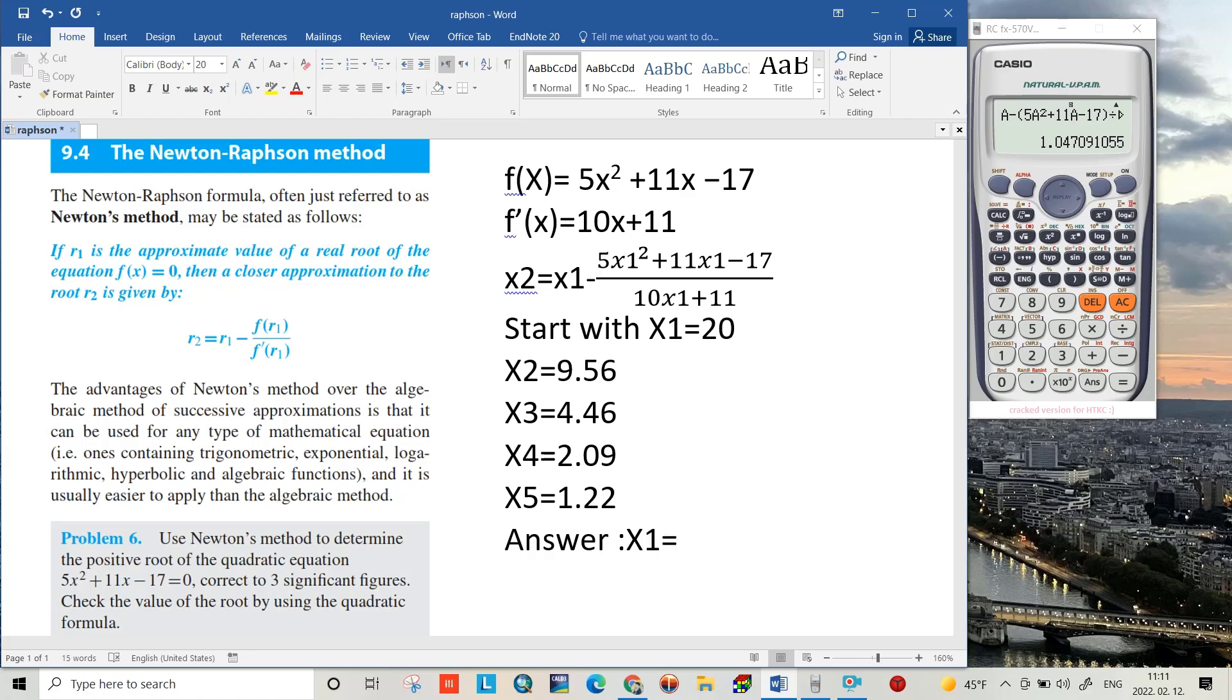Yes, the answer: x1 = 1.05, because it asked to find for three significant figures. Since the equation is squared, so we have two roots. Let's find the other. However, the problem doesn't ask, but I want to show you how you can find the other result.